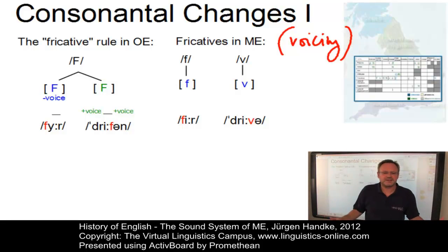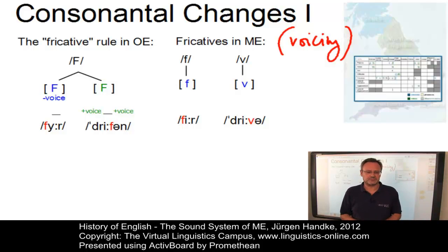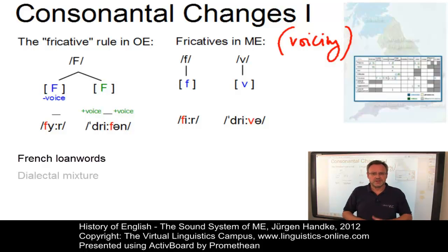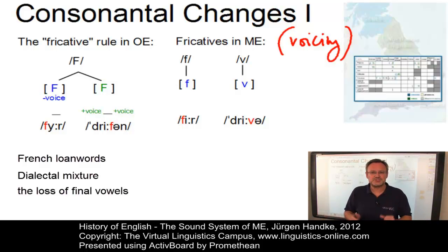It is not entirely clear why English, which had gotten along without a voiced-voiceless phonemic fricative contrast for almost half a millennium, should develop such a feature. The following hypotheses are generally put forward: the influence of French loanwords, a mixture of several dialects, and the loss of final vowels, which led to a less voiced environment.